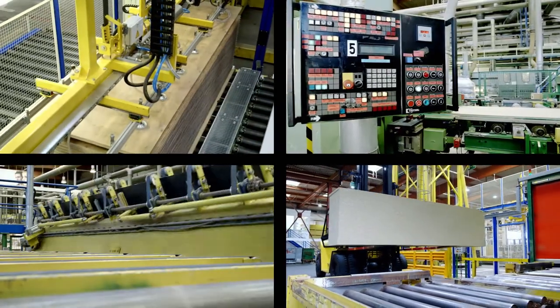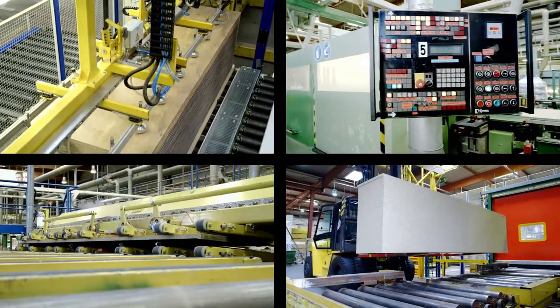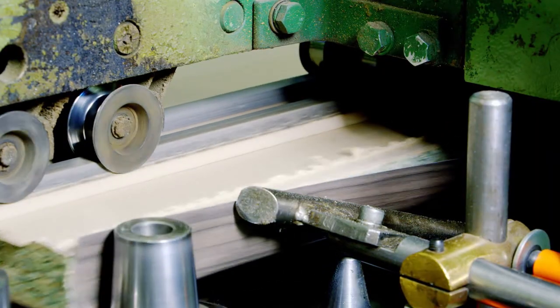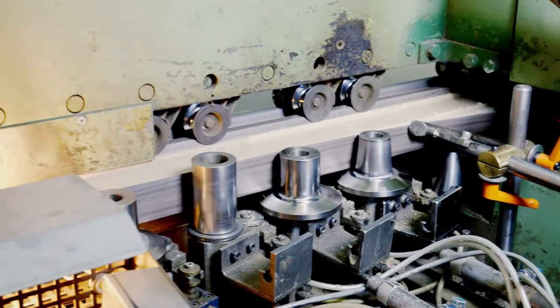Then the panel is either sent to the bonded elements store or to the post forming plant. This machine heats and bends the protruding laminate at the longitudinal edge and glues it to the core.